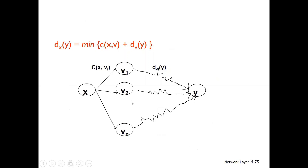For neighbor vi, the cost y is cxvi — the direct cost from x to vi — plus dviy, which is the path cost from vi to y. The sum of these gives dxy, the minimum cost from x to y.